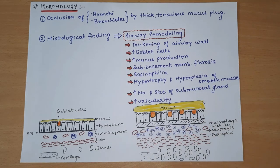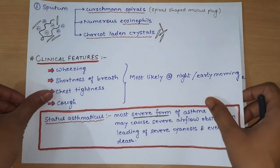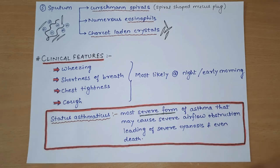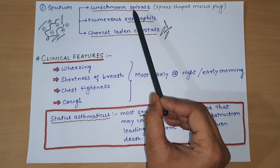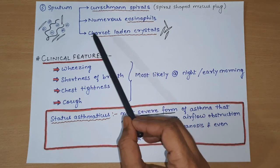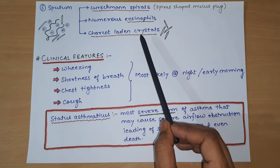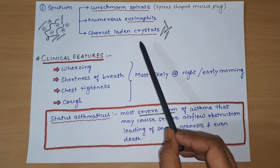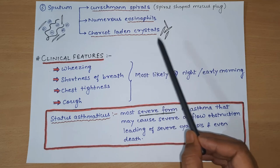So in summary, the entire airway undergoes remodeling - airway remodeling is a characteristic feature seen in the morphology of Bronchial Asthma. The third point is sputum - in sputum, we mainly see three things: Curschmann spirals, numerous eosinophils, and Charcot-Leyden crystals. Charcot-Leyden crystals are formed by galectin-10, as discussed in pathogenesis.